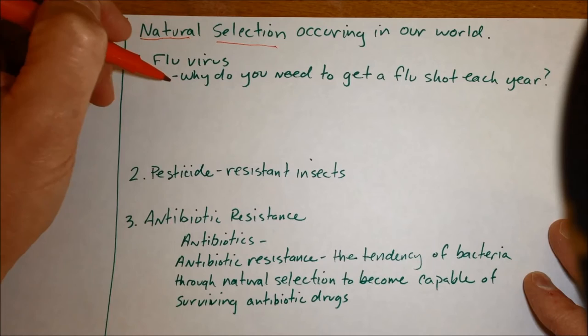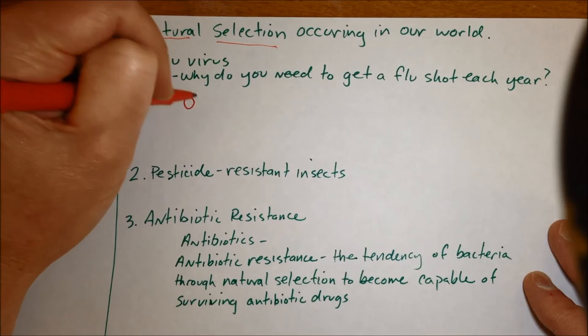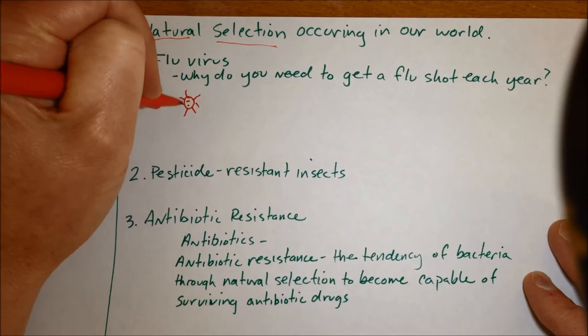One example we talked about is the flu virus. Everybody knows that you have to get a flu shot every year and the reason for that is the flu virus, this is my drawing of a virus, has an ability to mutate a lot.